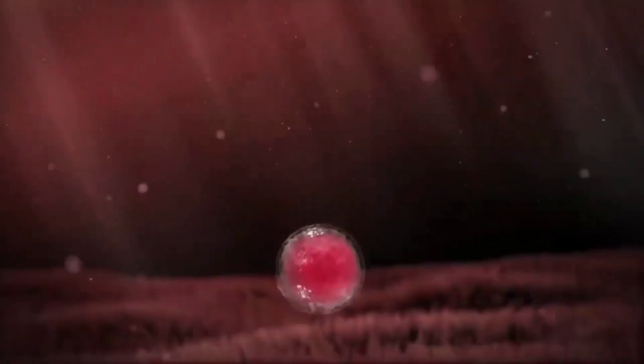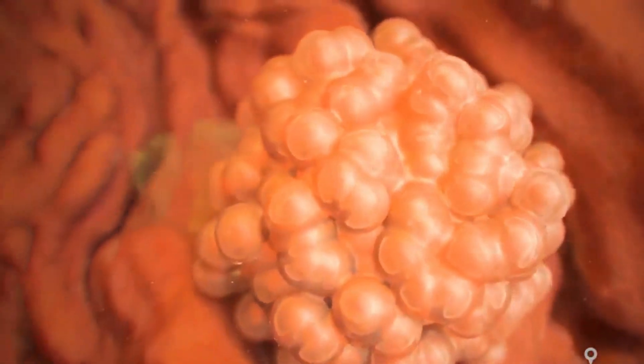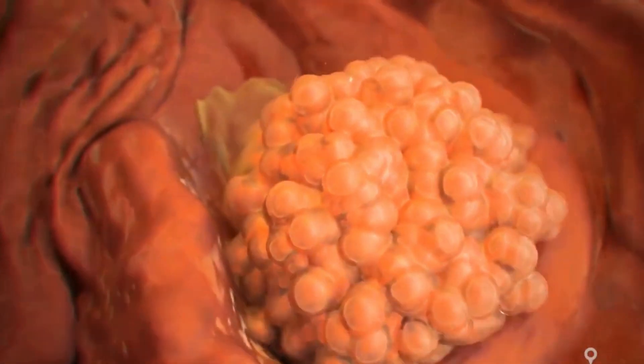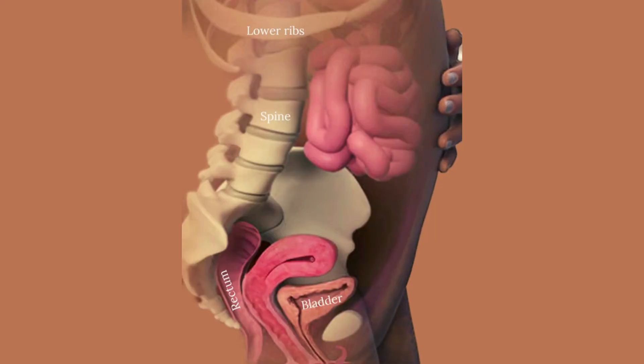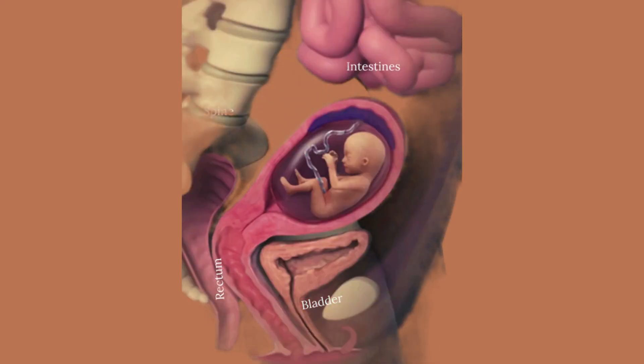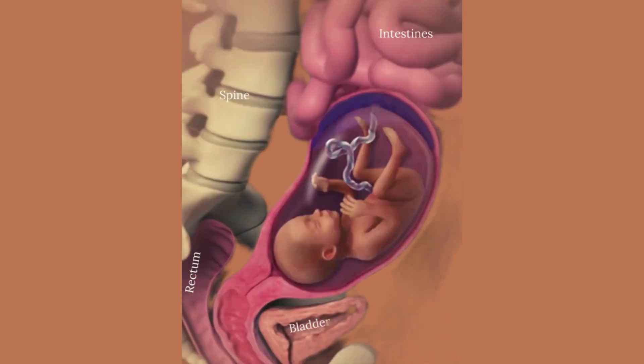The fertilized egg then travels towards the uterus, and after five to six days it becomes a blastocyst and burrows into the uterine lining. This process is called implantation, and it marks the beginning of a nine-month journey of growth and transformation, culminating in the miracle of birth.